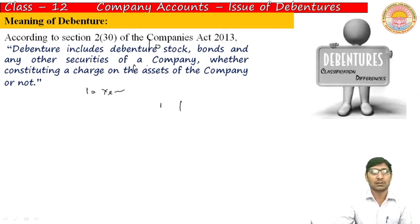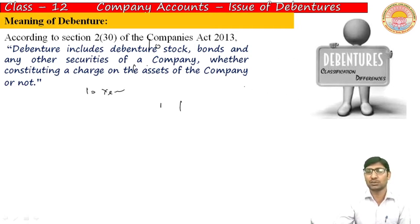According to Section 2, subsection 30 of the Companies Act 2013, debenture includes debenture stock, bond, and any other securities of a company, whether constituting a charge on the assets of the company or not. This means debentures can be issued by the company with mortgage (secured) or without mortgage (unsecured).